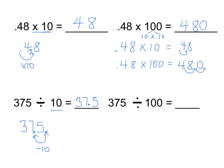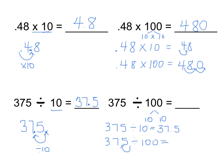Looking over here, 375 divided by 100 is the same thing as 375 divided by 10, divided by 10 again. So I'm going to do that in two steps. I've already done the first step — 375 divided by 10 once gives 37.5. Now I'm going to take 375 and divide by 100, moving the decimal point to the left once and twice, showing that I'm dividing by 10 and 10 again. That leaves me with 3.75, or 3 and 75 hundredths.